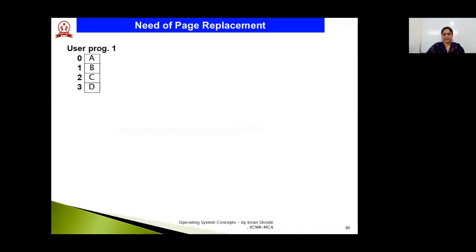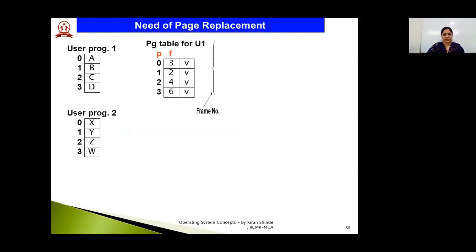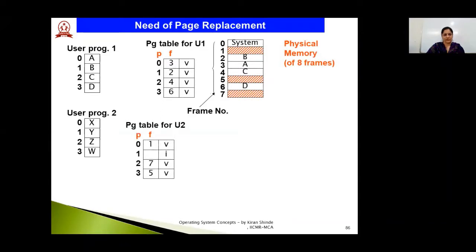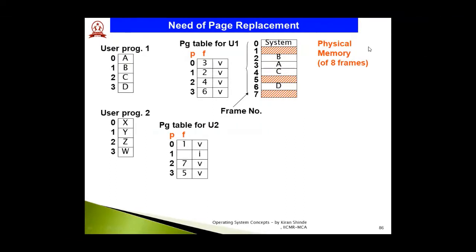First, let's understand the need for page replacement. Consider there are two programs — Program 1 and Program 2 — and two page tables are built for every program. For Program 1, the page table is built for four pages mapped with four frames such as 3, 2, 4, and 6. For Program 2, another page table is built where four pages are mapped with three frames. The system memory is assumed to be made up of eight frames.